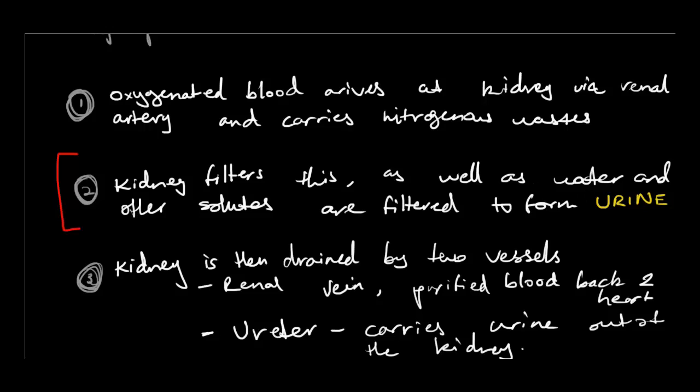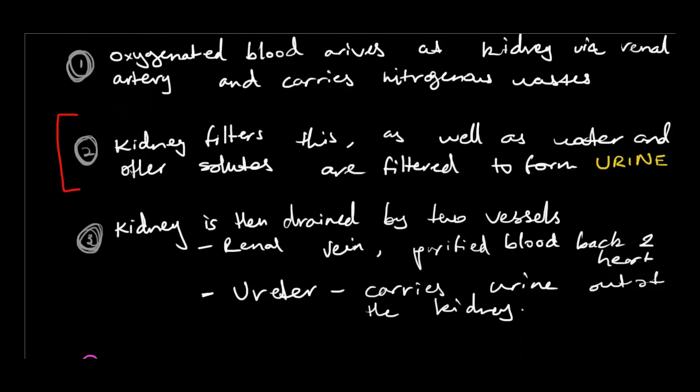Part three: the kidney is drained by two vessels. There's the renal vein, which carries purified blood back to the heart — veins have valves and return blood to the heart. Then there's the ureter, which carries urine out of the kidney. The ureter takes the urine from the kidney to be excreted. Those are the three basic stages of the kidney.